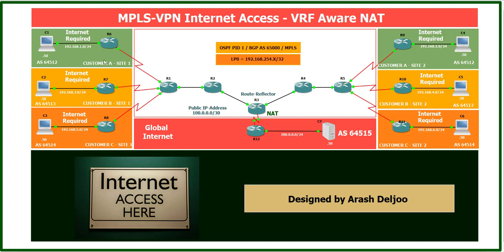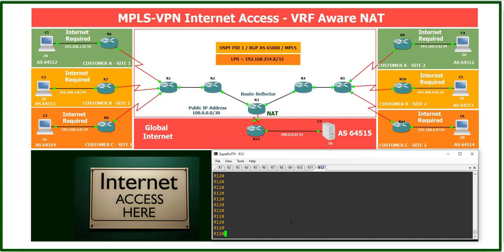Don't forget: in this scenario Customer A site 1 already has reachability to Customer A site 2 — I configured it before. Also Customer B site 1 to B site 2, and C site 1 to C site 2. I used exactly the same configuration as the previous video, and for better use of time I configured them beforehand.